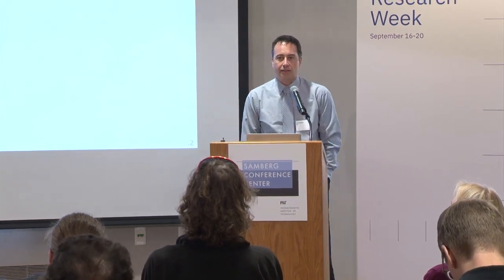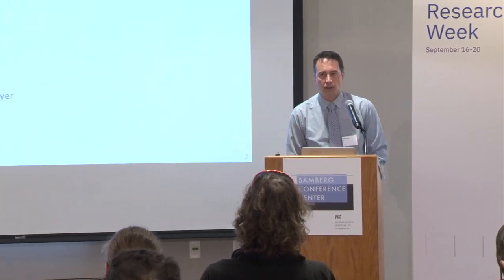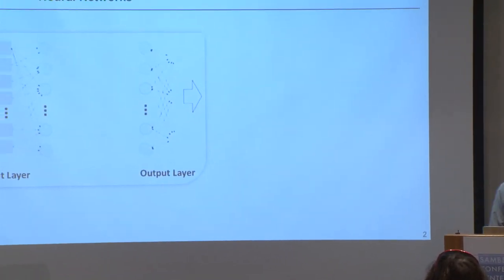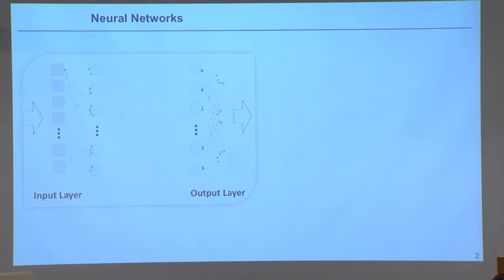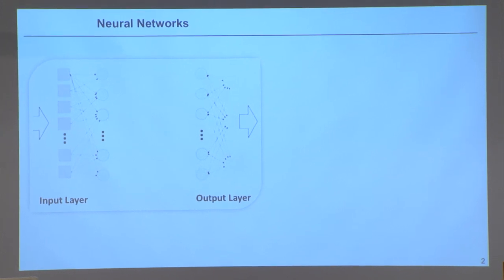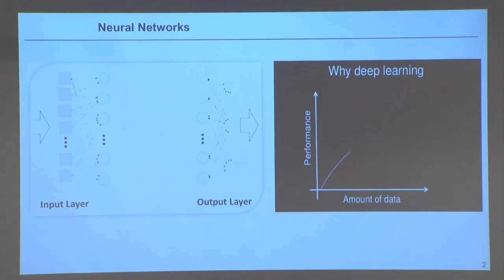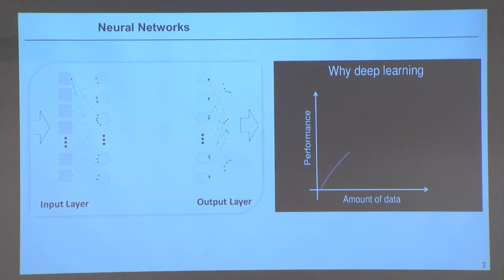Here's our good friend the neural network — a collection of neurons with weights and activation functions that you can use to do pretty much anything these days. For example, they can be used to do image classification. We know that performance gets better and better the more training data you have. We've heard this a million times. But how many times did you stop thinking about what it means — performance? What do people actually measure? A lot of my talk is about what should we measure.